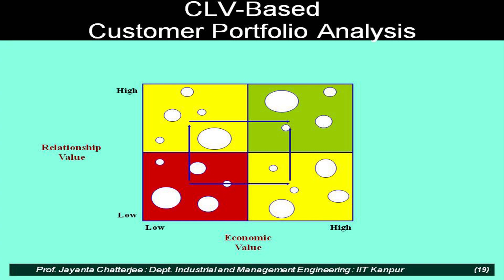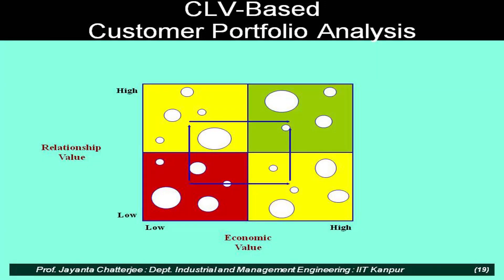On one hand we have high relationship value and high economic value. The green quadrant — customers who provide both high economic value and high relationship value — will be our first priority. Our second priority may be customers with high relationship value but lower economic value, trying to improve their economic value and move them toward the first quadrant. We will also focus on customers with high economic value but low relationship value, working to build relationship there. Moving these quadrants toward the top-right quadrant will be our sales strategy.